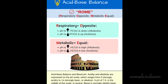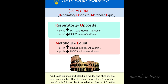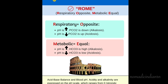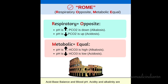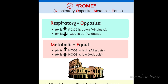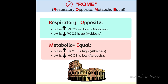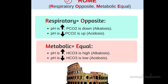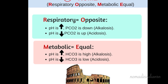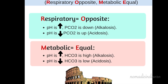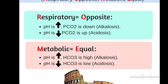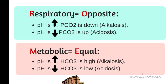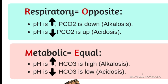In respiratory acidosis, pH is low and CO2 is high — think hypoventilation, COPD or drug overdose. In respiratory alkalosis, pH is high and CO2 is low, seen in hyperventilation or panic attacks. For metabolic acidosis, pH is low and bicarbonate level is low, occurring in DKA, renal failure or severe diarrhea. And finally, metabolic alkalosis has a high pH and high bicarbonate levels, seen in excessive vomiting or diuretic use.